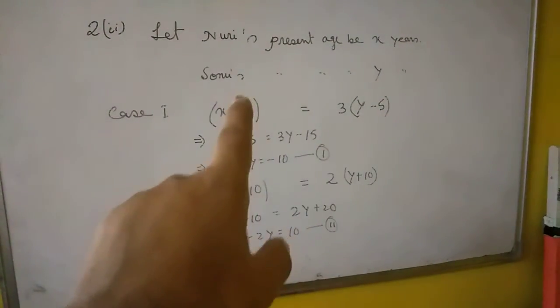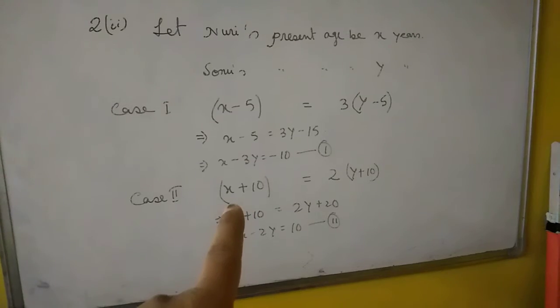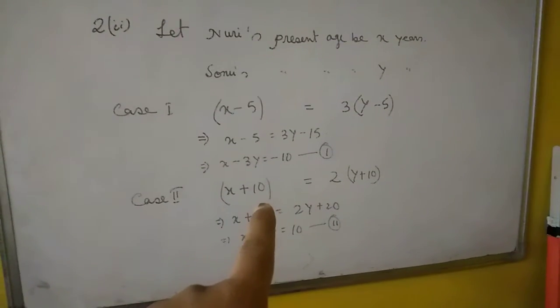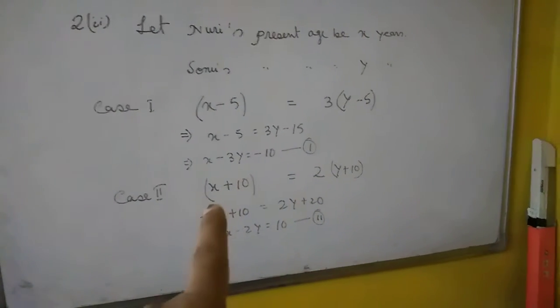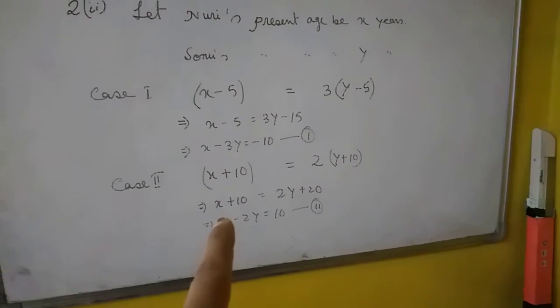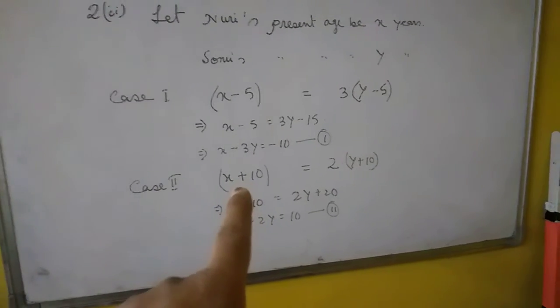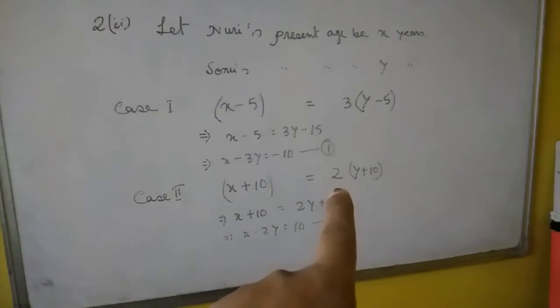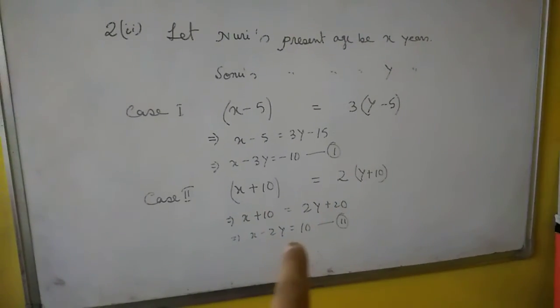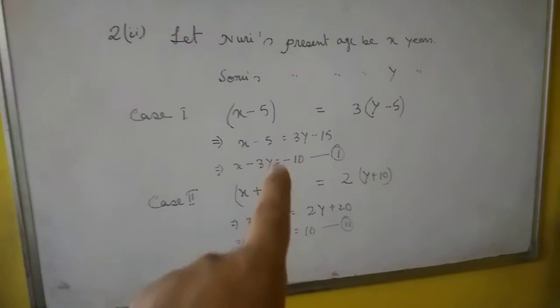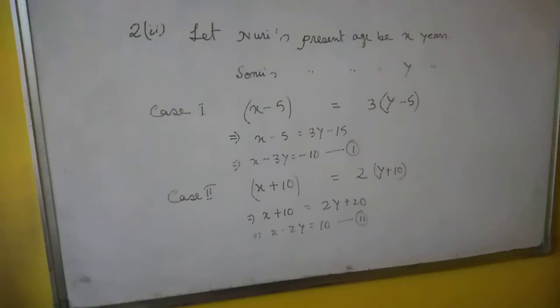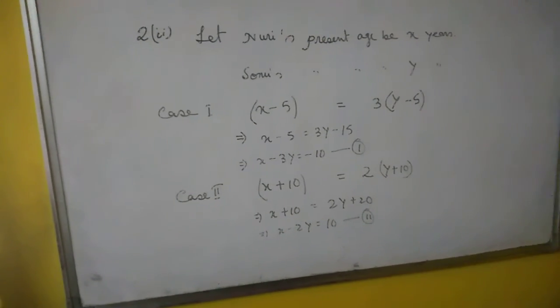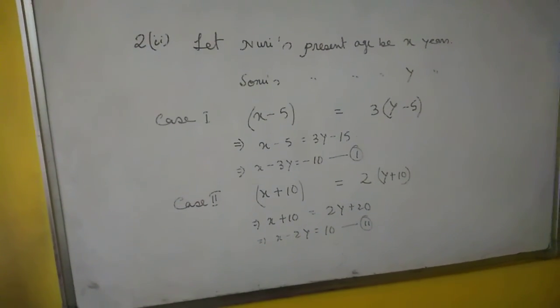For the second equation, consider 10 years later. After 10 years, Nuri will be twice as old as Sonu, so (X + 10) = 2(Y + 10). Simplifying: X + 10 = 2Y + 20, giving us X - 2Y = 10. This is the second equation. Solve these two equations together to find the present ages of Nuri and Sonu.